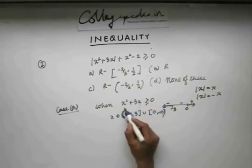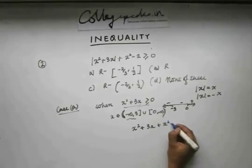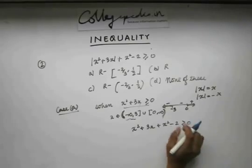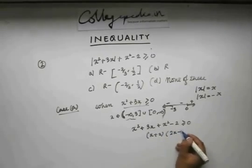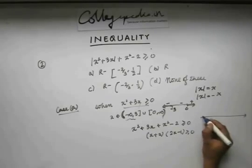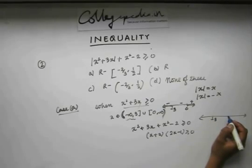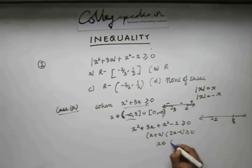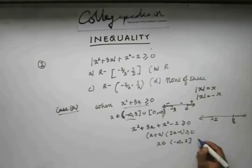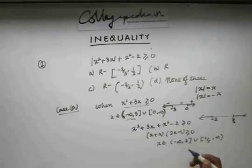Given this condition is satisfied, we remove the mod sign and get x² + 3x ≥ 0. Factorizing, the roots are −2 and 1/2. Using the number line with −2 and 1/2 marked, x belongs to (−∞, −2] ∪ [1/2, ∞), including the endpoints because of the equality sign.